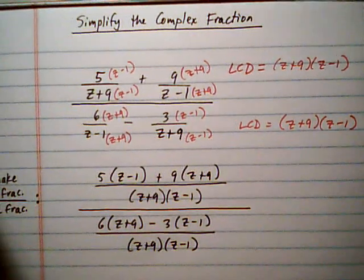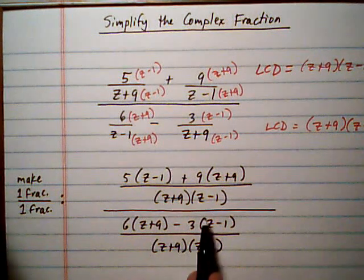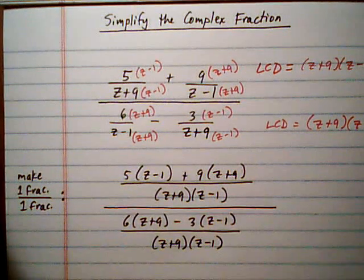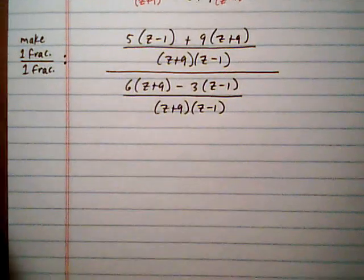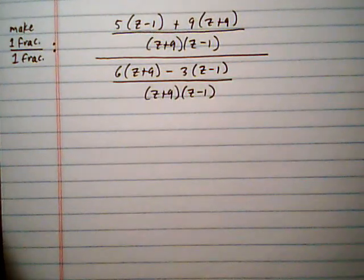Now at this point, if you see that you're going to be able to cancel the two denominators out because they're the same, that's fine. Go ahead and do it. If you don't see why that's going to happen, then don't do it. You'll be able to do some canceling later when it makes more sense to you.